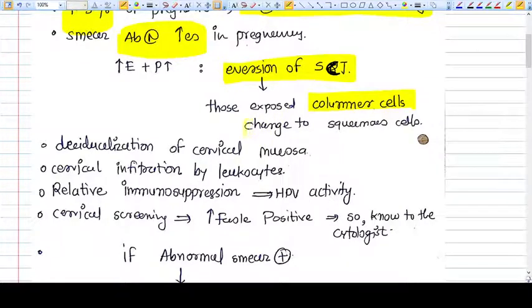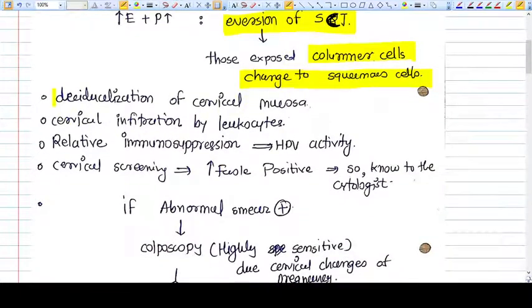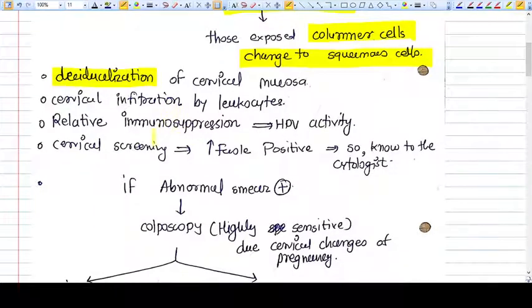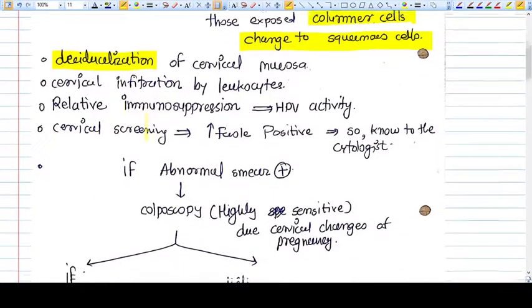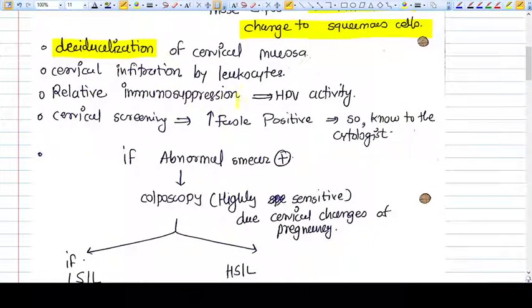There will be squamous metaplasia and decidualization of the cervical mucosa along with the endometrium. Cervical infiltration by leukocytes occurs, and relative immunosuppression is present in pregnancy, so HPV activity increases.